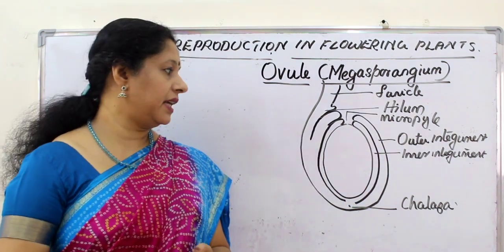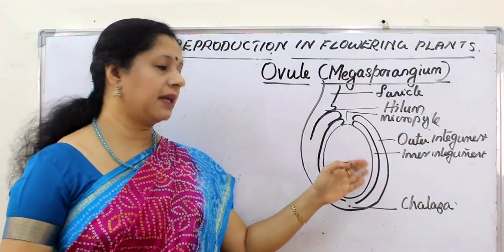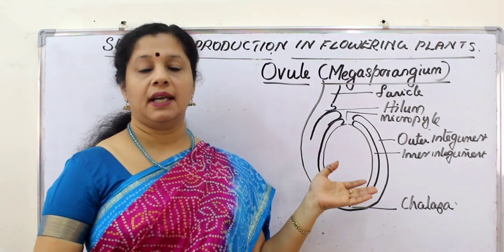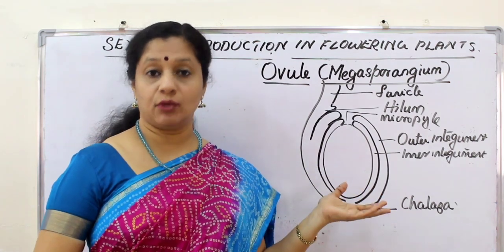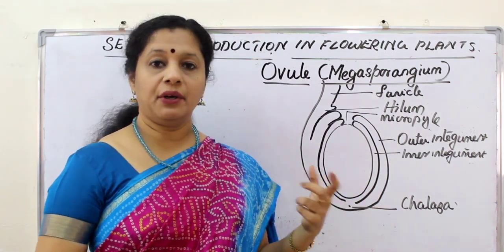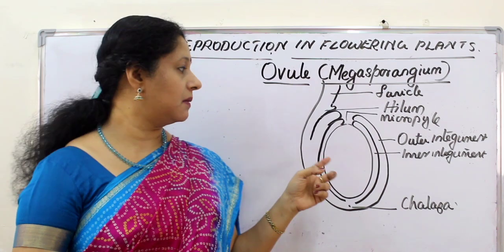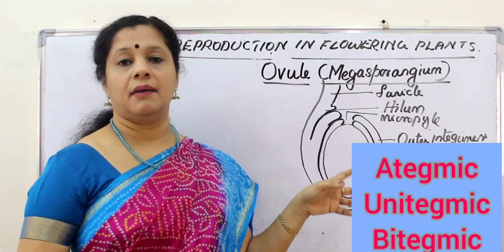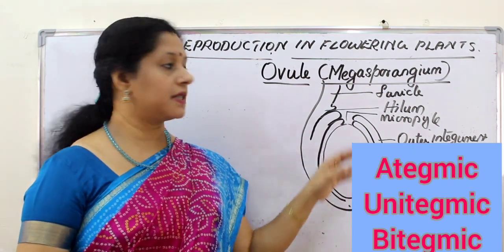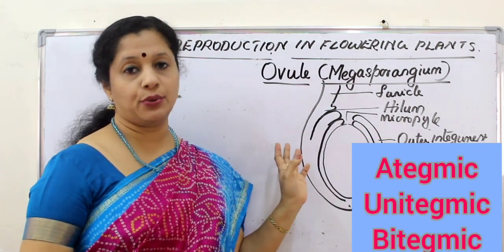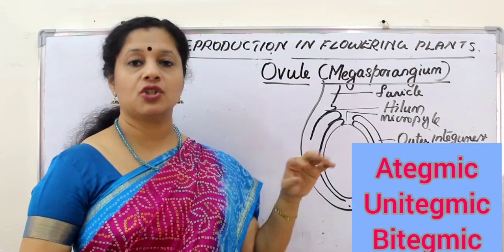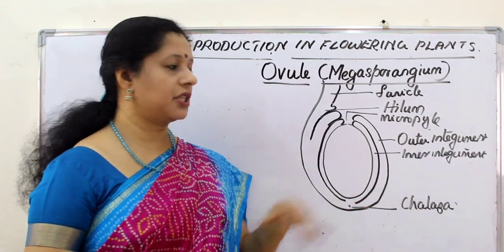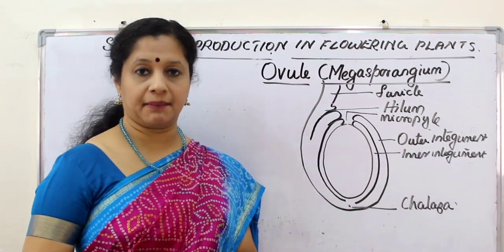There are plants with variations. Sometimes the integument may not be present — that is called ategmic. Example: the sandalwood tree. In gymnosperms there will be only one integument, whereas in most angiosperms there are two integuments. With one integument the condition is called unitegmic, and with two integuments it is called bitegmic.